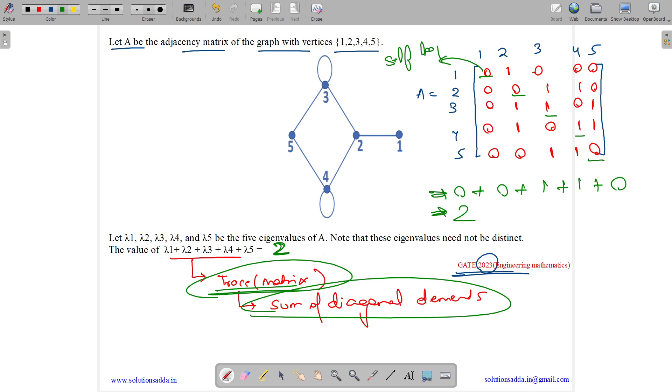Only in case of a self loop we will have a diagonal element as 1. So we can write this equal to number of self loops. This is the shortcut. So number of self loops is equal to the sum of diagonal elements. There are two self loops, so the sum of diagonal elements is two.